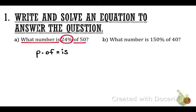This is the percent equation. The p is the percent. The problem says 24%, and we have to change that to a decimal: 0.24. So instead of p, we put 0.24. The original problem tells us the of is 50.